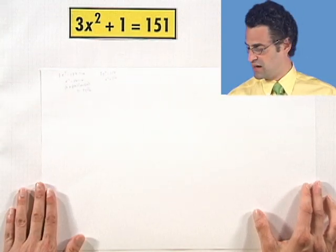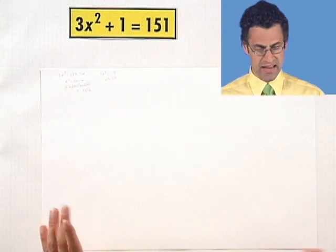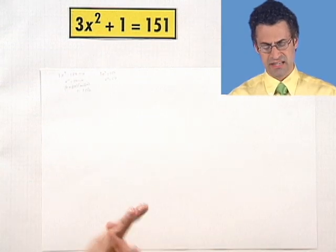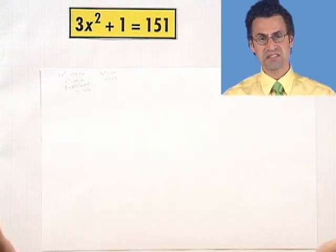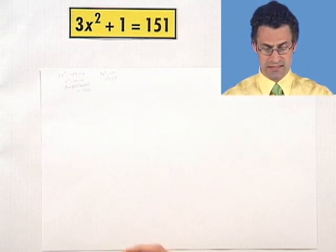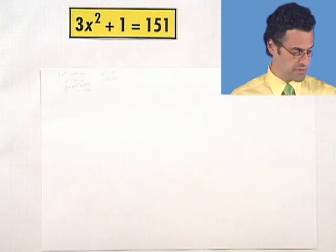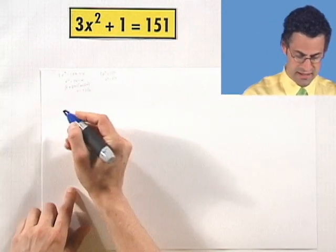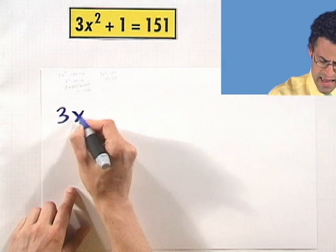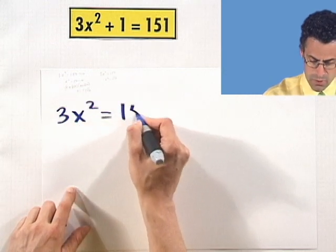Here's a quadratic equation. Let's solve it. What I'm going to do first is say, hey, you know what? I don't see any x's here. I'm not going to worry about factoring. Let's just be crazy. Let's just be a little bit nuts and bring the 1 over to the other side. We're going to subtract 1 from both sides. And what do I see? I see 3x squared would equal 150.